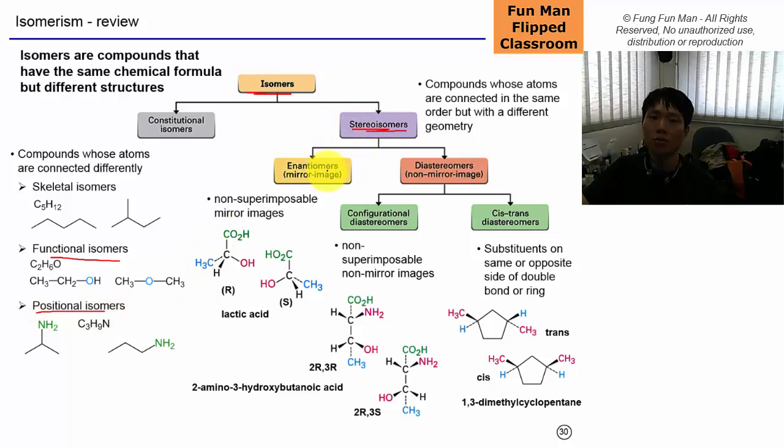Under stereoisomer, we've got two main kinds. One is enantiomer, mirror images, non-superimposable mirror image, R and S, lactic acid and the other one is the diastereomer form. They are non-mirror images. So under this, we have got cis-trans, remember cis-trans and configurational diastereomers. For this, we can use this term on the ring, cycloalkanes or even in some alkenes.